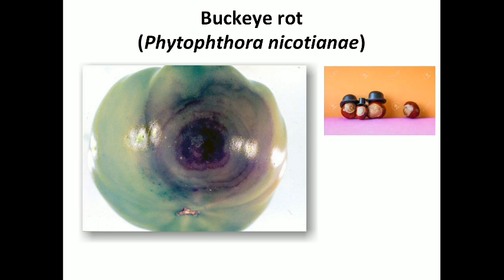The last disease is buckeye rot, caused by Phytophthora nicotianae. Initially, water-soaked spots or grayish-green lesions appear, which later turn brownish on the fruit. Since the fruit contacts the soil, symptoms develop resembling a bull's eye — black alternating dark and light brown concentric rings with smooth lesions. These cover more than half the fruit, resembling markings of buckeye chestnuts after rotting.